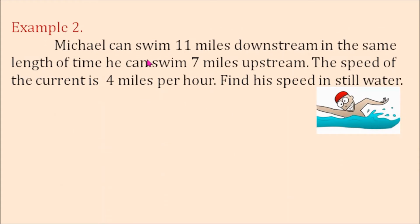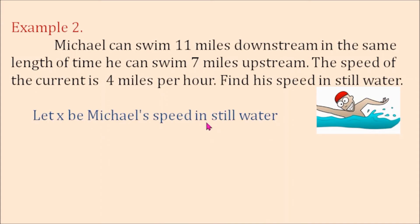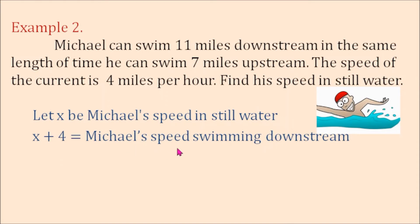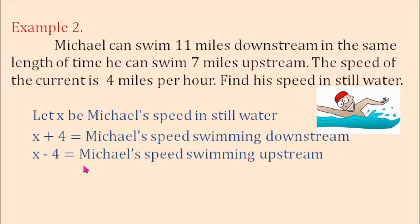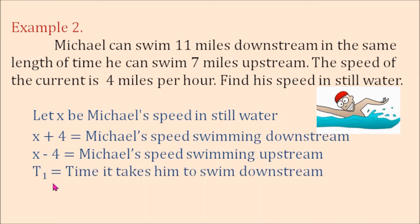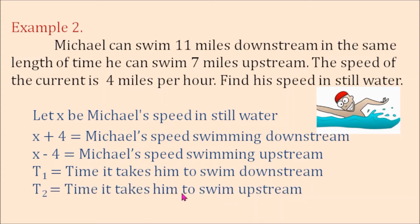Example number 2: Michael can swim 11 miles downstream in the same length of time he can swim 7 miles upstream. The speed of the current is 4 miles per hour. Find his speed in still water. First, let x be Michael's speed in still water. x plus 4 is Michael's speed swimming downstream, because Michael is swimming with the current. x minus 4 is Michael's speed swimming upstream, because Michael is swimming against the current.